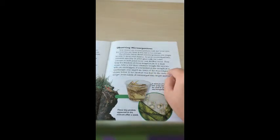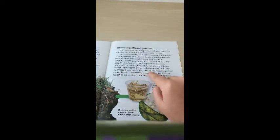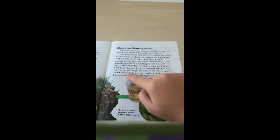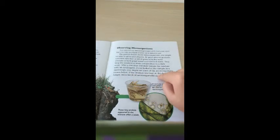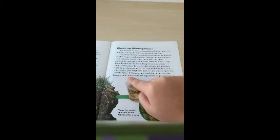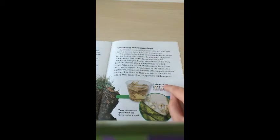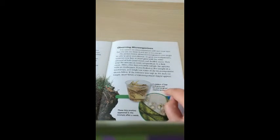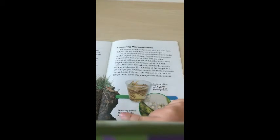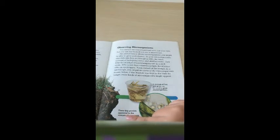If you looked at the sample in a microscope, you might see some of the microorganisms shown below. If the mixture was kept in the dark for longer, more kinds of microorganisms might appear. A mixture of hay and grass can be used to grow microorganisms. These tiny protists appear in the mixture after a week.